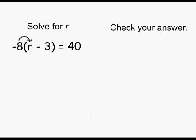Using the distributive property, we are going to multiply negative 8 times r, which is negative 8r.